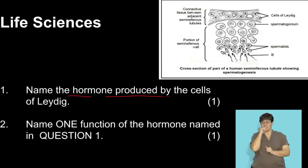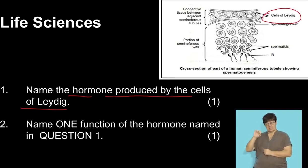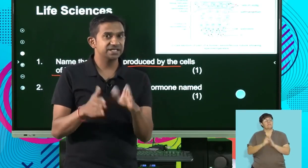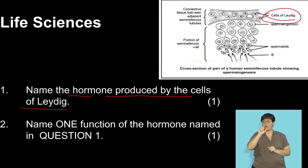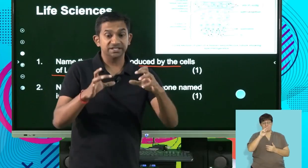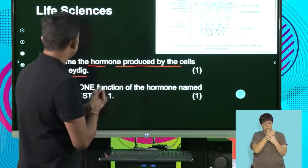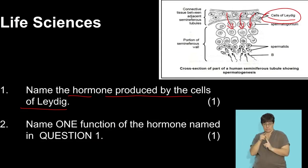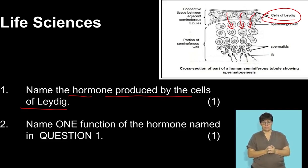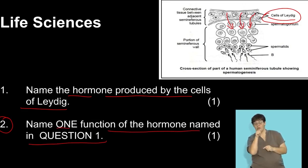Question one: name the hormone produced by the cells of Leydig. The Leydig cells — also referred to in some books as interstitial cells, meaning cells between the seminiferous tubules — produce testosterone. Testosterone enters into the seminiferous tubules, stimulating the process of spermatogenesis, or sperm formation. So the answer is testosterone.